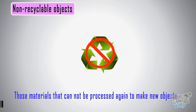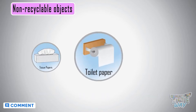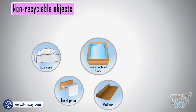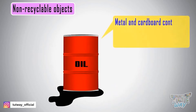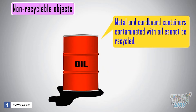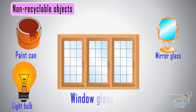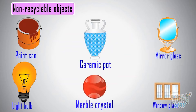Now let's see what non-recyclable objects or materials are. Materials that cannot be processed to make new objects are non-recyclable. Examples include: tissue paper, paper towels, wax paper, cardboard lined with plastic, waxed or waterproof cardboard, motor oil cans, metal and cardboard containers contaminated with oil-based products, paint cans, light bulbs, mirror glass, window glass, ceramic or marble, and crystal.